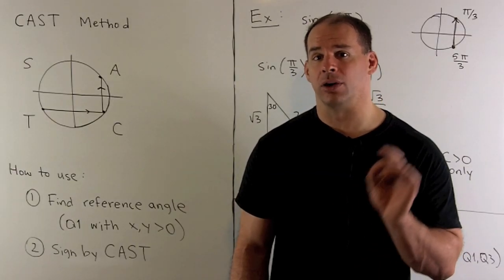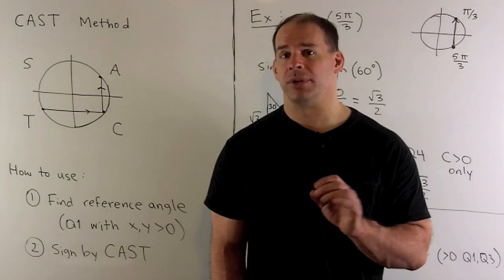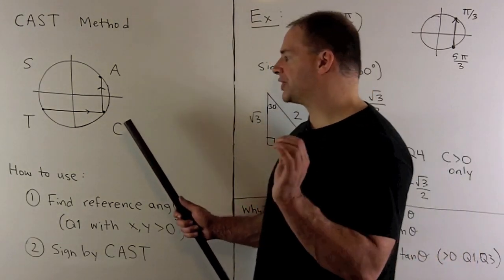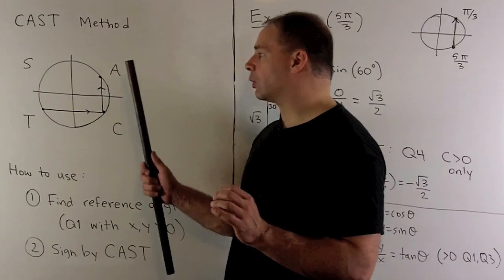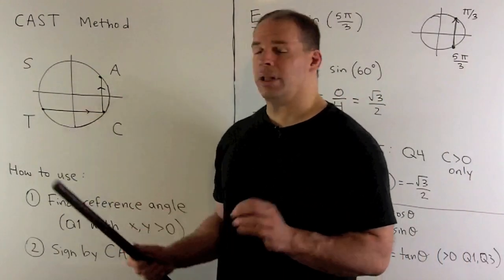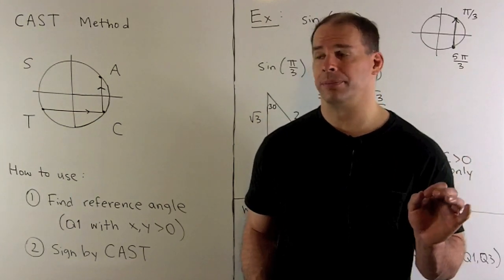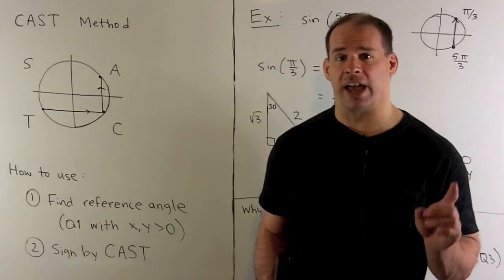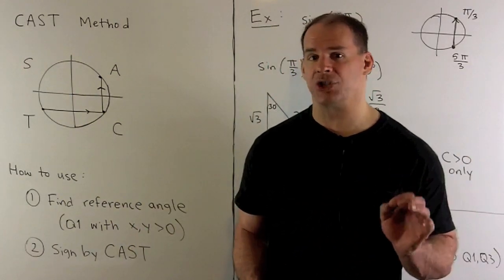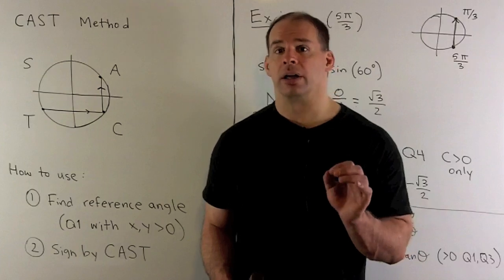Once we can find cosine and sine in quadrant one, extending to the rest of the unit circle is just a matter of putting in plus and minus signs using the CAST method. Depending on which quadrant the angle falls in, you assign a letter: C (cosine) for quadrant four, A (all) for quadrant one, S (sine) for quadrant two, T (tangent) for quadrant three. The letter tells you which function is positive; the other two are negative. So in Q1 all are positive; Q2 sine is positive; Q3 tangent is positive; Q4 cosine is positive.